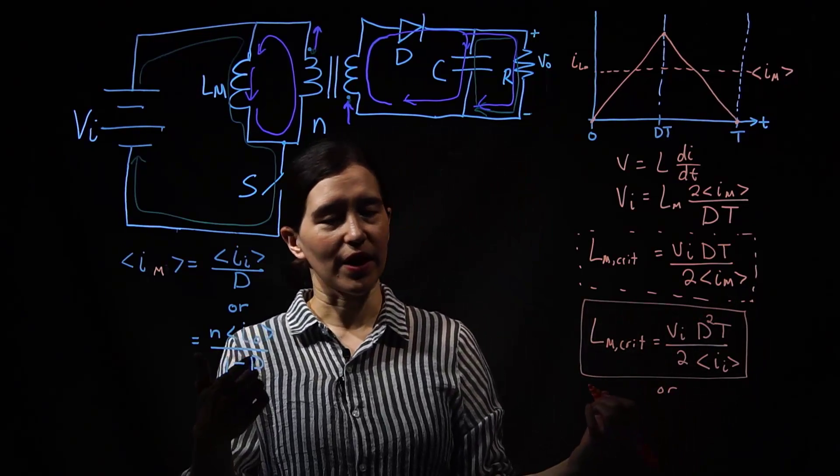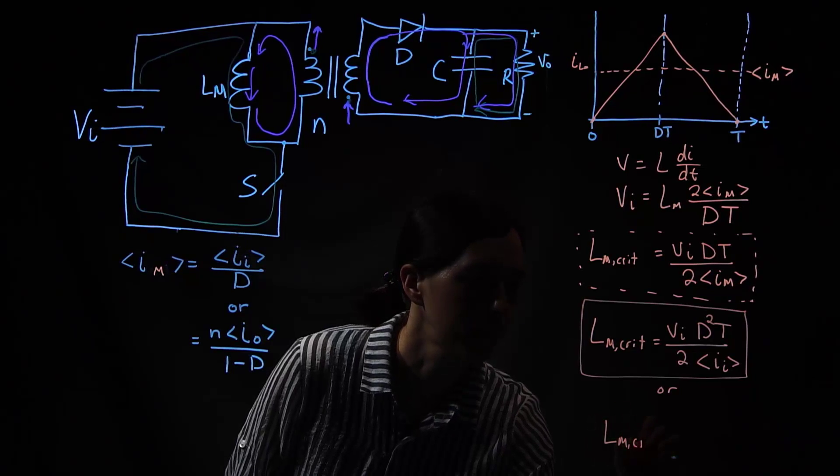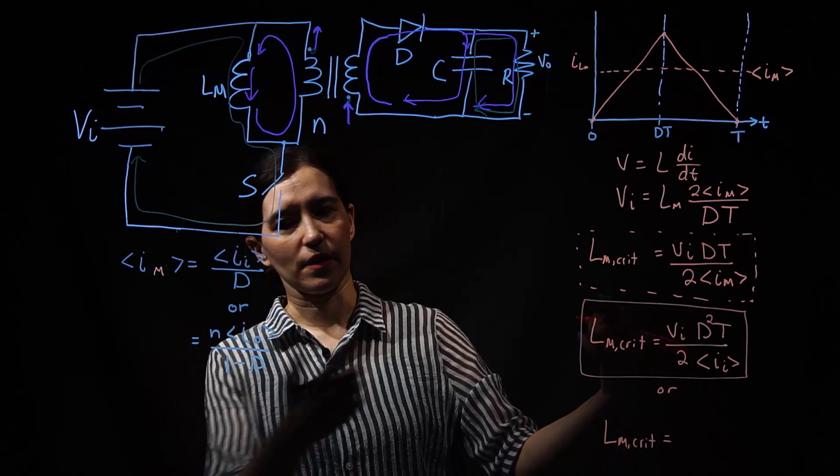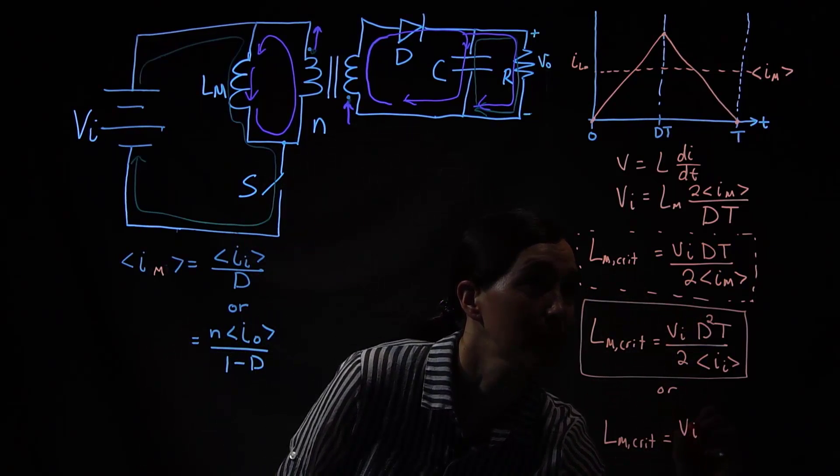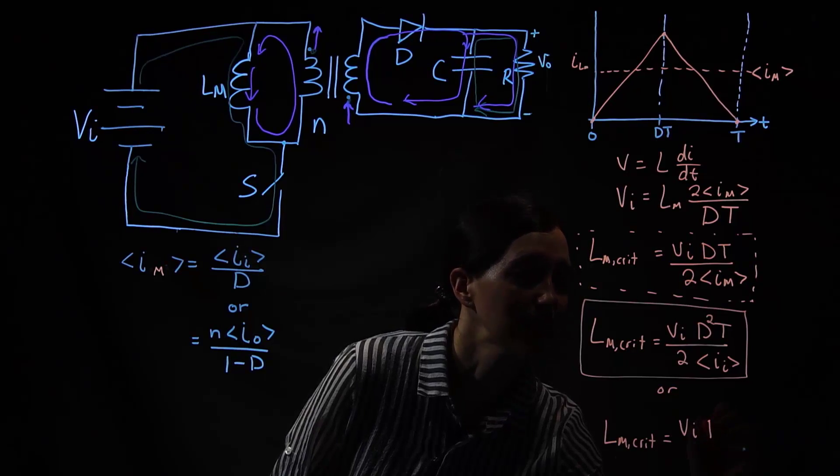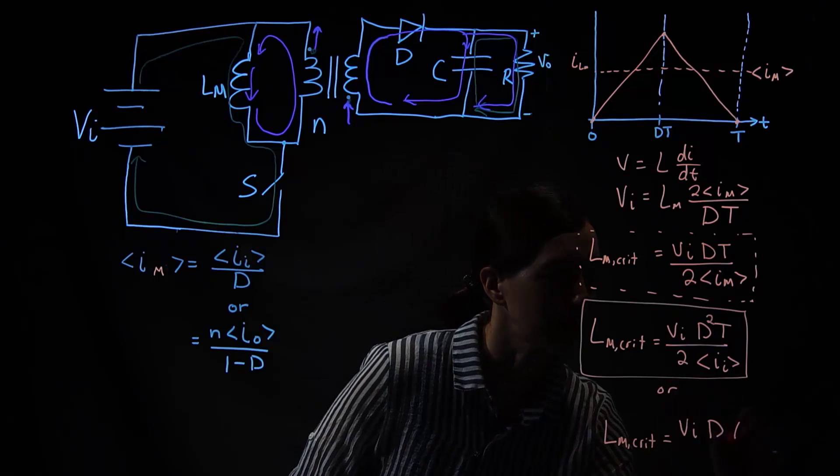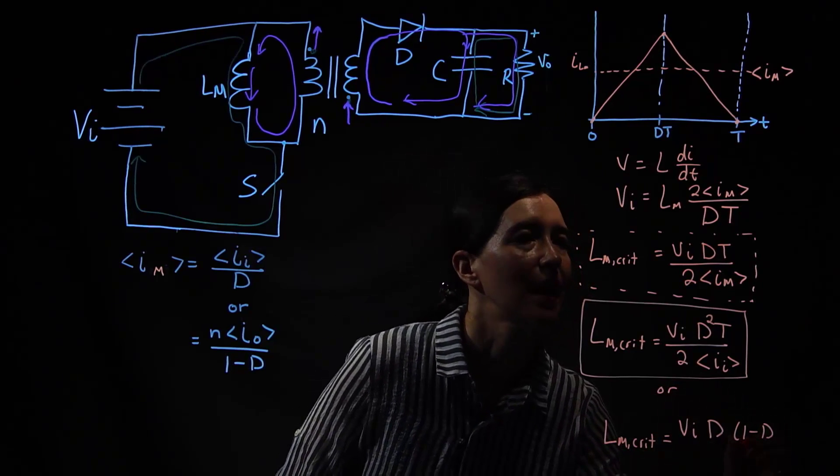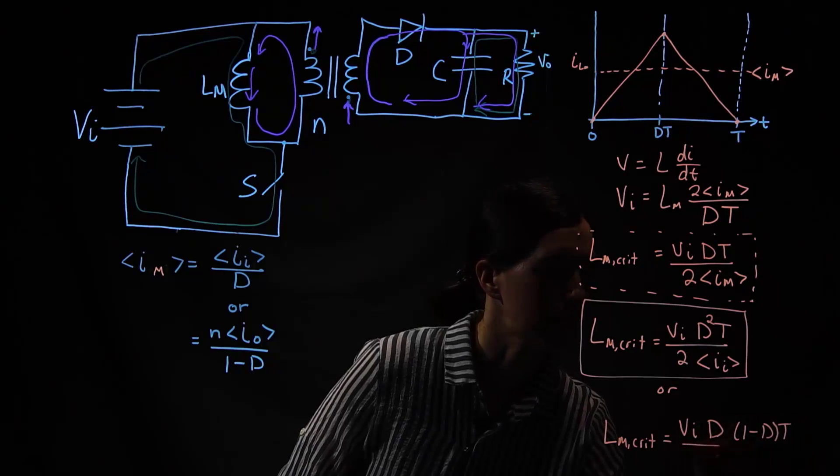Or, if we want to write it in terms of io, we can plug this one in too. We're going to get vi. And we're going to get d. I'm going to plug this in here. So we're going to get 1 minus d. So put all these terms together. And then t. That's in the numerator.